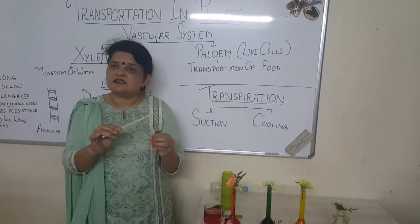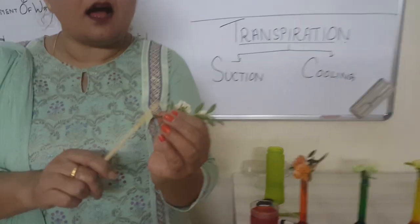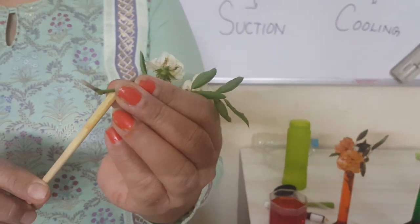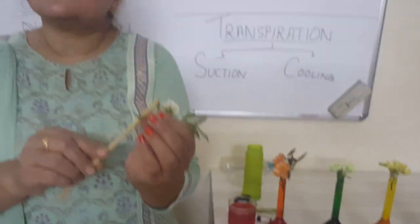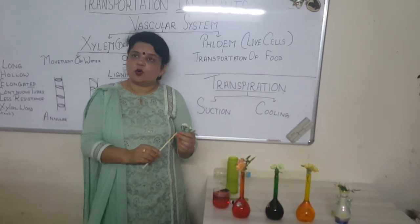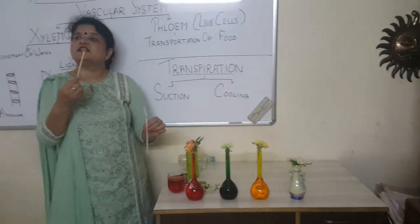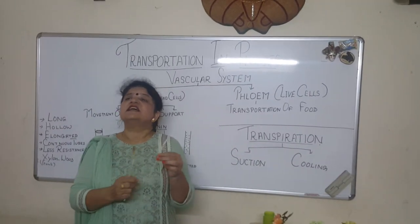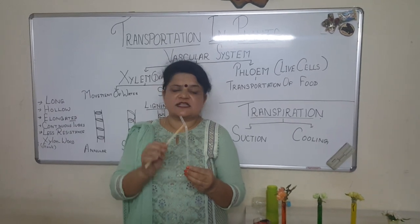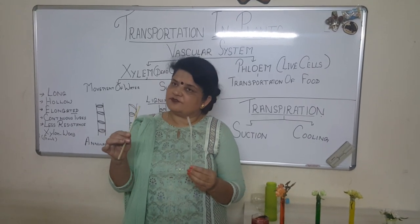That's how water travels up. If I take a cross section — if I cut this stem and observe it under a microscope — I will see red patches inside. These are the tubes, the straw through which the water travelled. The name of this straw is xylem. So what is xylem? Xylem is a thin tube, like a straw, through which water is moved upward.